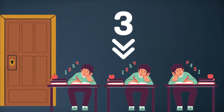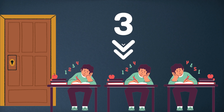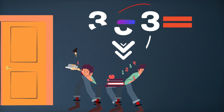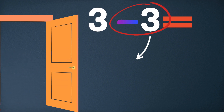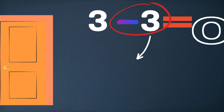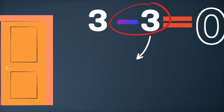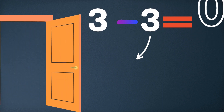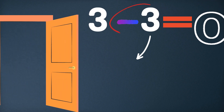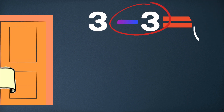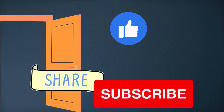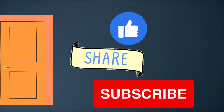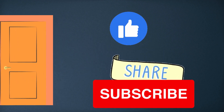Dear kids, let's solve an example of one-digit subtraction. Three boys are studying in the class. Three boys left the classroom, shown by a red circle highlighting the number 3 with a subtraction sign. So nobody is left in the classroom. The answer after subtracting 3 from 3 is 0.